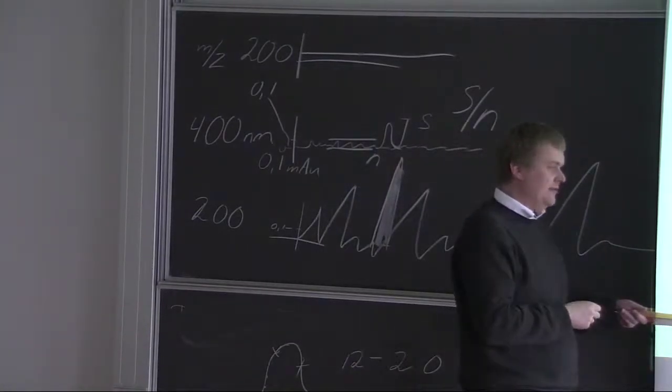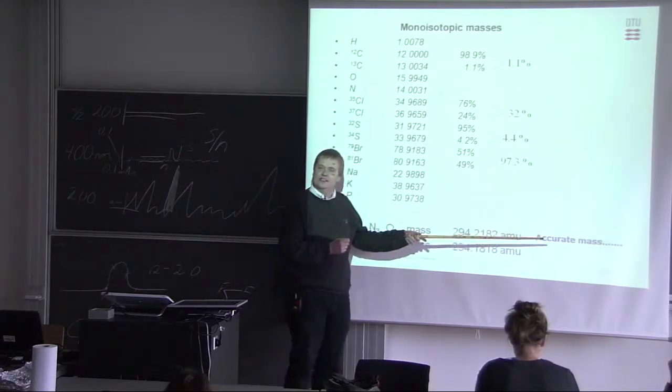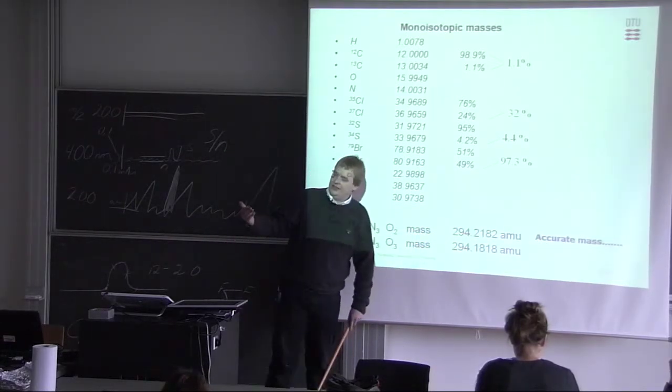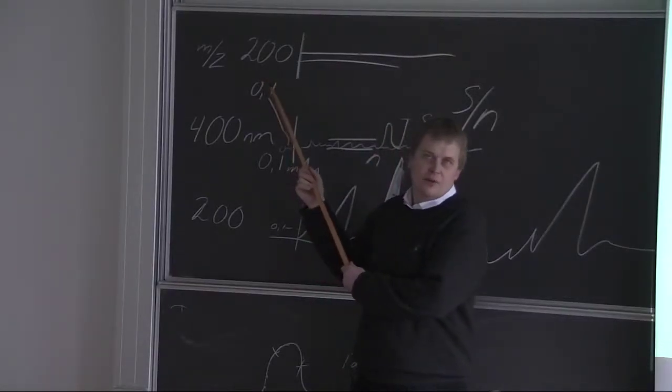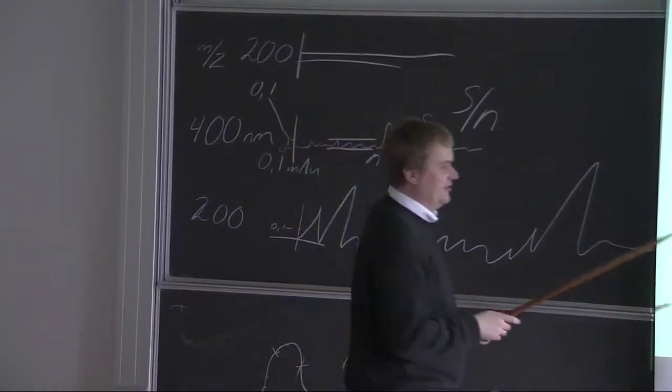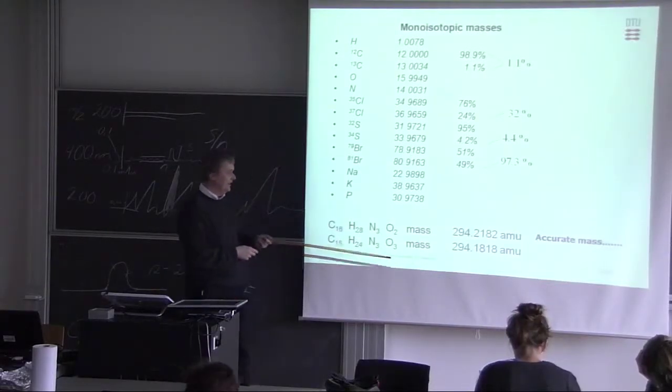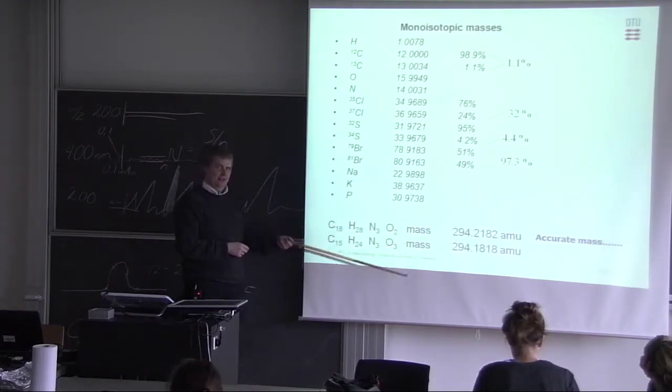As I said, some of the instruments can measure our mass very accurately. We call that accurate mass. The instruments that can only say this iron is 200, we call those nominal mass mass spectrometers. But you can also see that if you can measure this very accurately, you will be able to differentiate these two. And we'll come back to those next time.